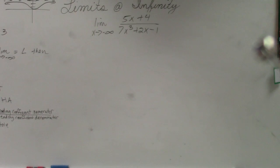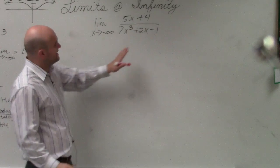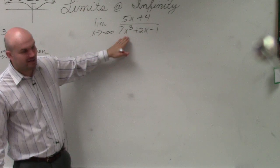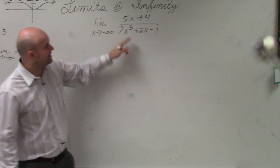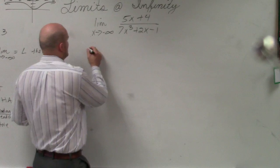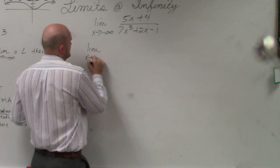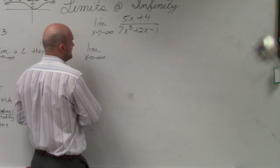So again, our algebraic method of determining the limit is: we take the highest power in our denominator and divide each and every term by that highest power. So I'm just going to rewrite this as x approaches negative infinity.